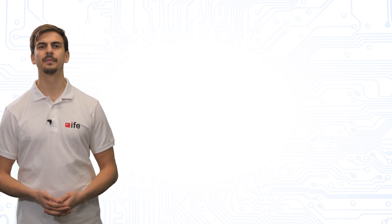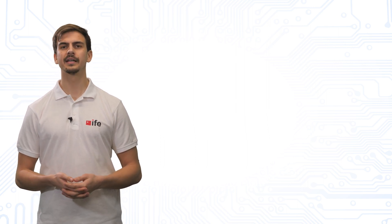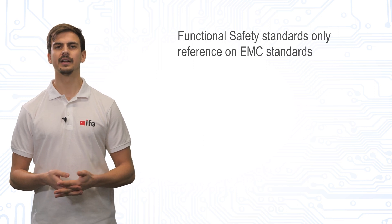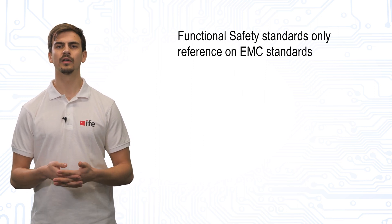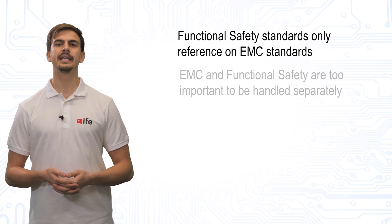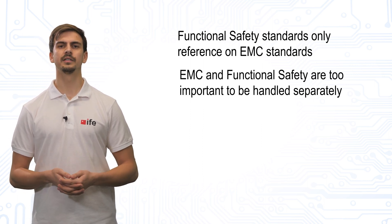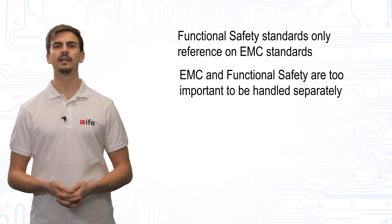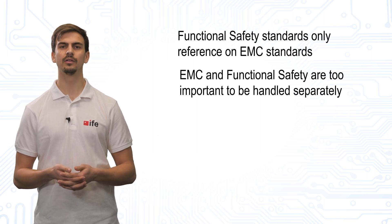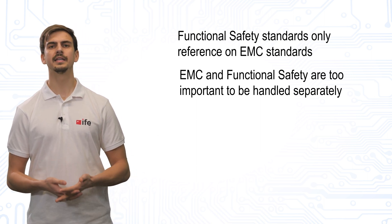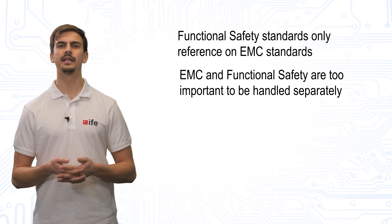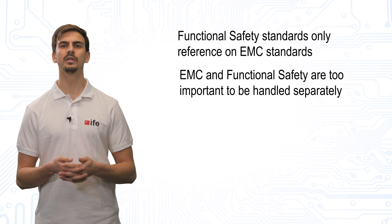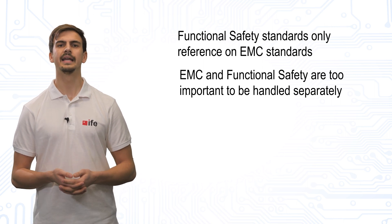The ISO 26262 mentions EMC several times, which shows the importance of this topic, but does not directly examine the topic. The functional safety standard rather refers to the corresponding EMC safety standards. EMC and functional safety are too important to be handled separately. Due to the fact that hardware can fail, functions are acknowledged not to be without a fail. To be on the safe side, the accepted probability of failing is limited depending on the assigned automotive safety integrity level, the ASIL level.